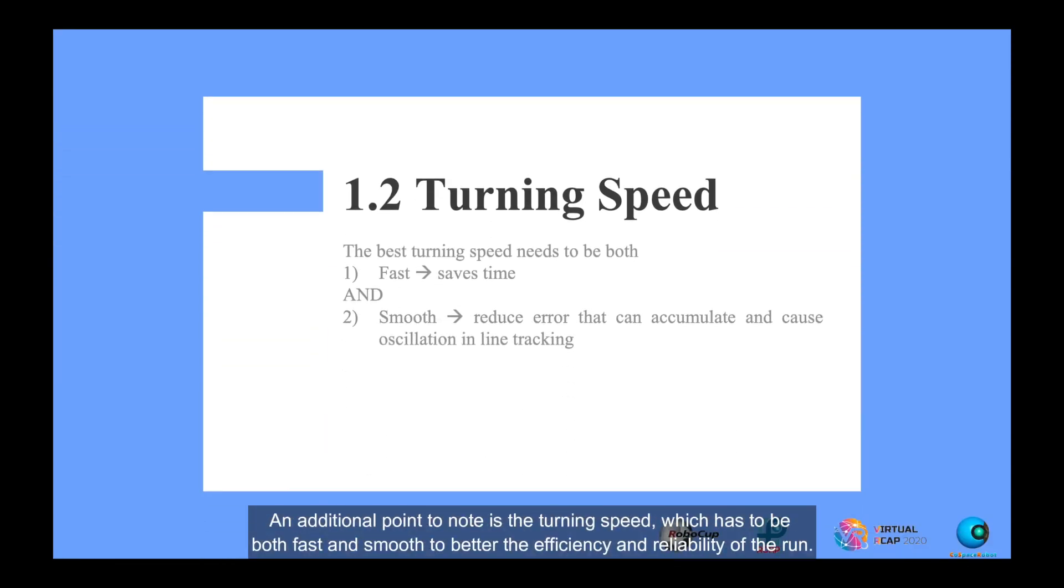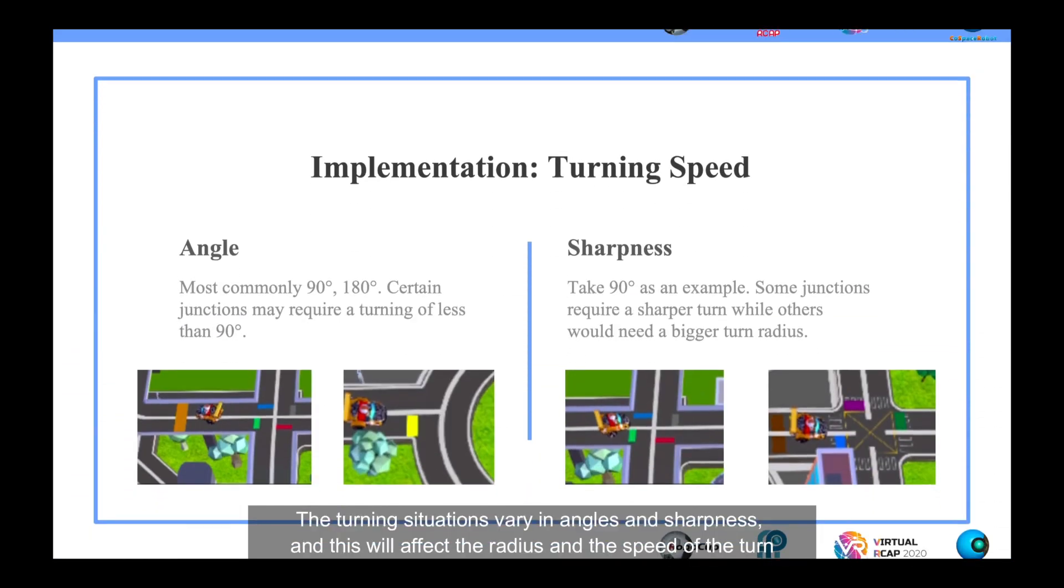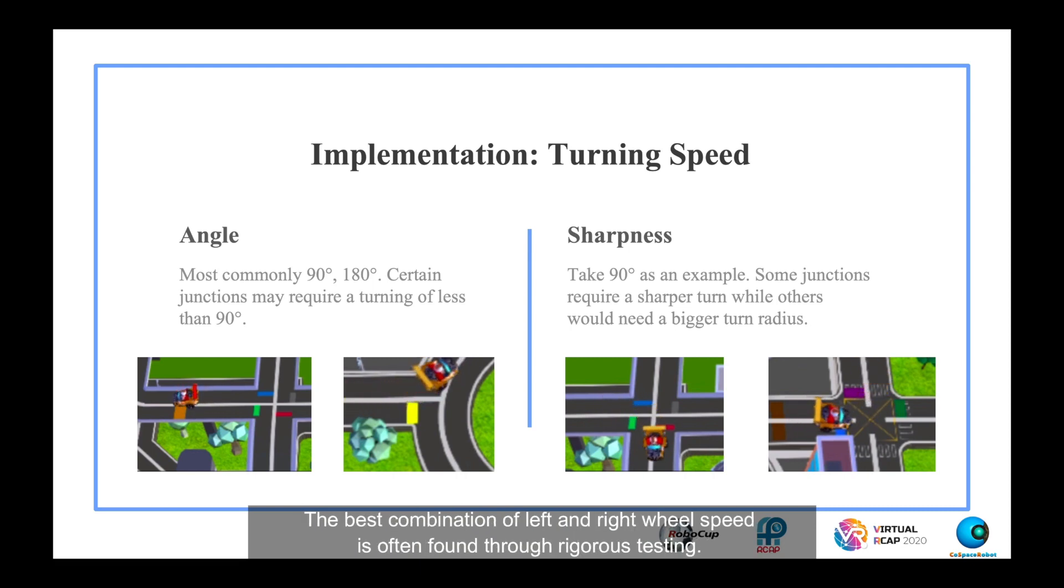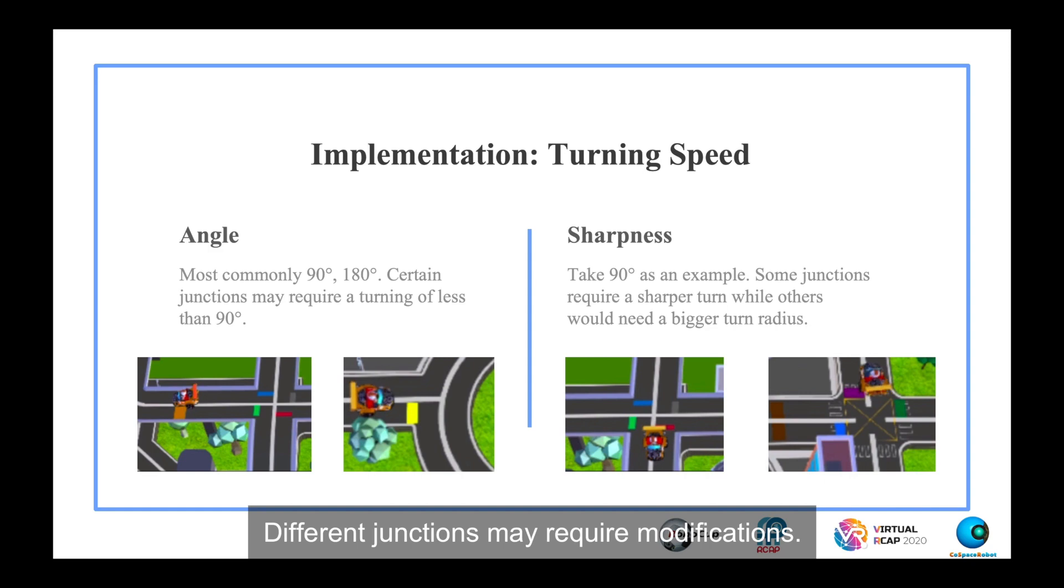An additional point to note is the turning speed, which has to be both fast and smooth to better the efficiency and reliability of the run. The turning situations vary in angles and sharpness, as this will affect the radius and speed of the turn. The best combination of left and right wheel speed is often found through rigorous testing. Different functions may require modifications.